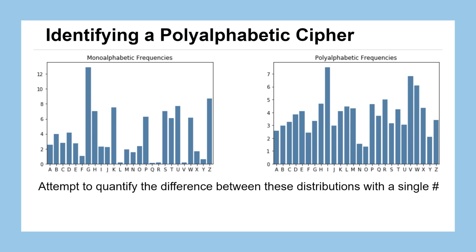We know that we can identify the difference between a mono or a polyalphabetic cipher by looking at their letter distributions. Caesar ciphers or other monoalphabetic ciphers follow the frequency distribution we see on the left — some letters appear quite a bit like E or A, and others appear hardly at all like X, Y, or Z. It's really feast or famine for a monoalphabetic frequency distribution — very volatile.